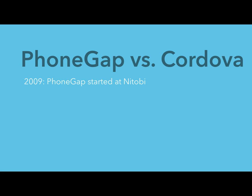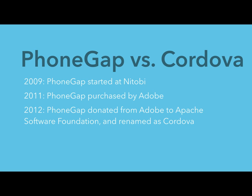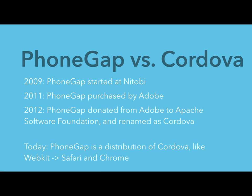PhoneGap started in 2009 when a company called Nitobi created it at a dev meetup. Adobe purchased it in 2011 and donated it to Apache as open source, renaming the open source core to Cordova. Adobe kept a branded version called PhoneGap — similar to how WebKit is open source and Safari/Chrome are built on top of it. When working in the open source world, you'll generally be working with Cordova.